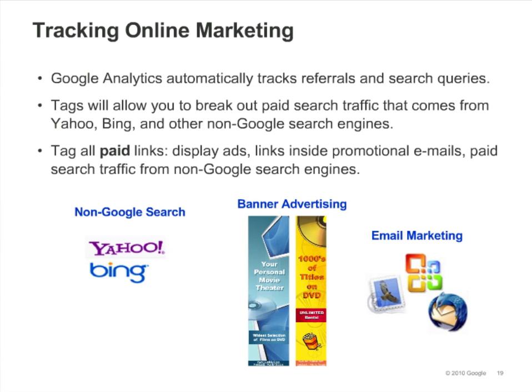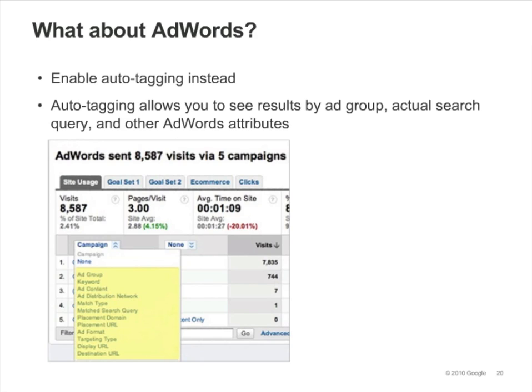Google Analytics automatically tracks all of the referrals and search queries that send traffic to your website. However, if you are running paid advertising campaigns, you should add tags to the destination URLs of your ads. Adding a tag allows you to attach information about the campaign that will show up in your Analytics reports. Although it's possible to manually tag your AdWords ads, you should enable auto-tagging instead. If you manually tag your AdWords ads, the AdWords reports will only show you information by campaign and keyword. If you enable auto-tagging, you'll be able to see much more detail — results by ad group, matched search query, placement domain, and many other AdWords attributes.